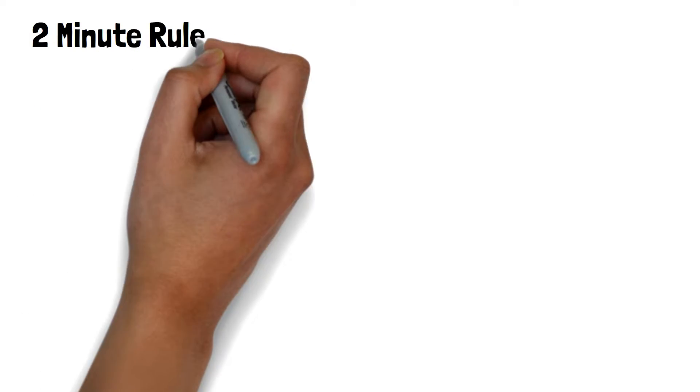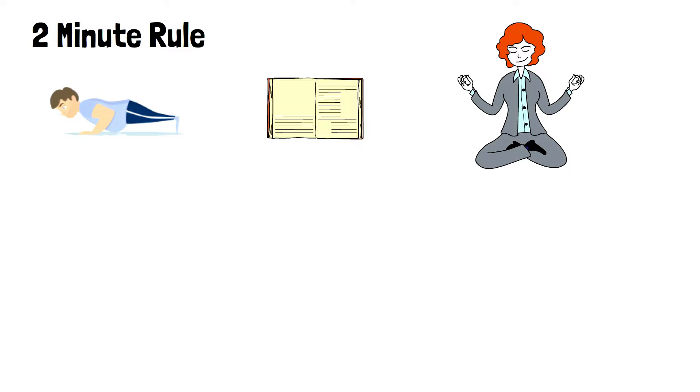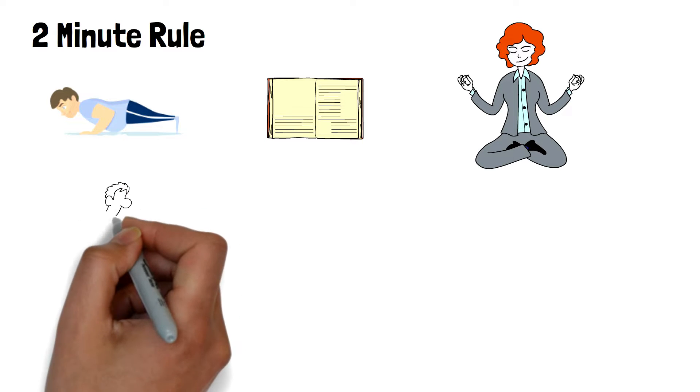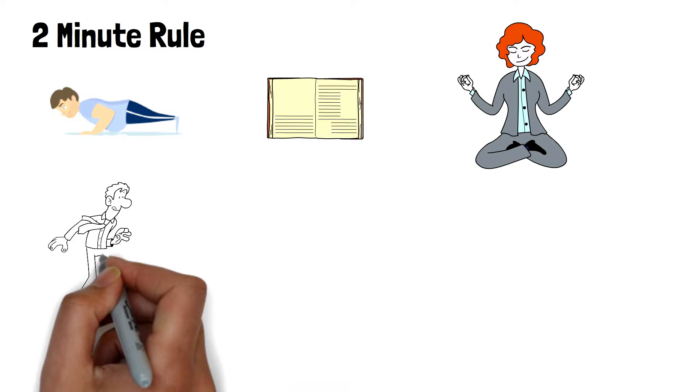The Two Minute Rule is the best when it comes to developing habits. If you want to go to the gym, just work out for five minutes. If you want to read 30 books a year, just read a paragraph today. If you want to meditate every day, just start with one minute.